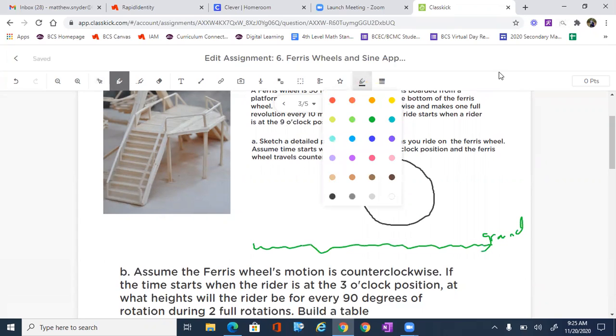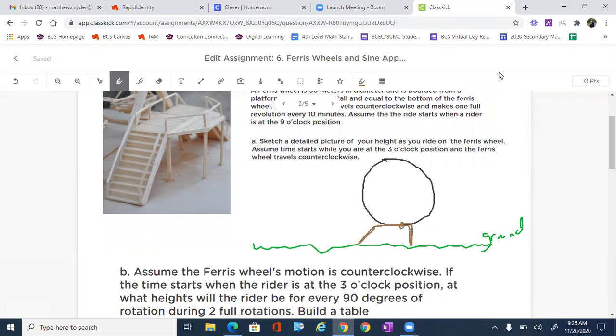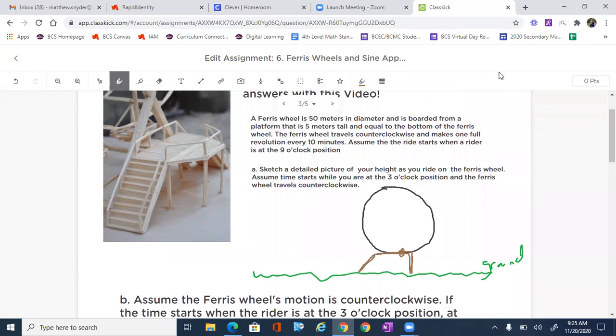And then what we have is a platform in which people actually climb up the platform to get onto the ride down here at the bottom. The platform is five meters tall. So we know that this is five meters, which means that the bottom height is five meters.